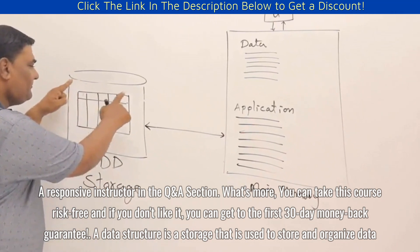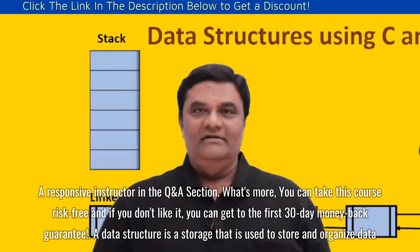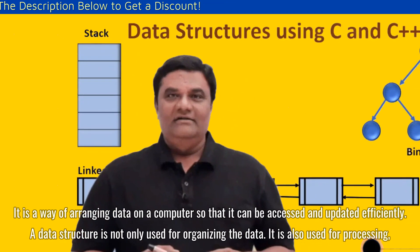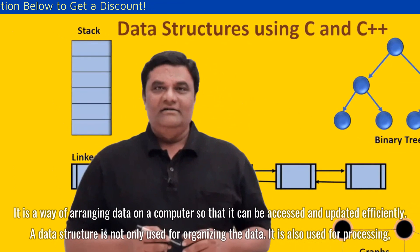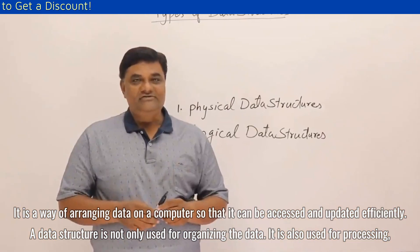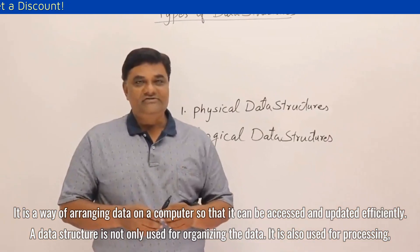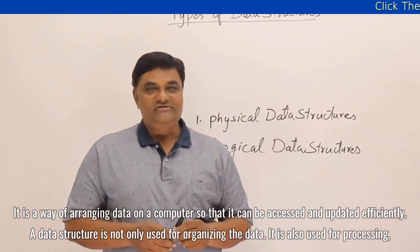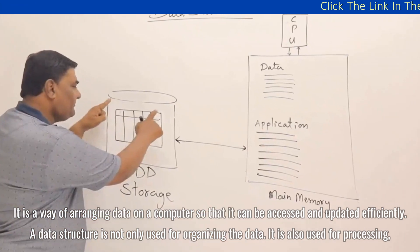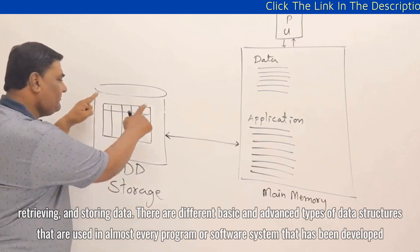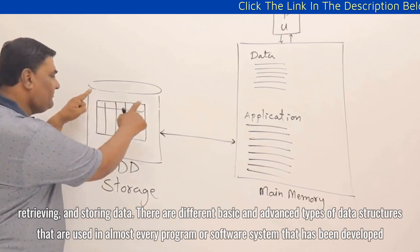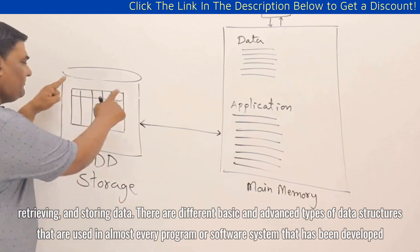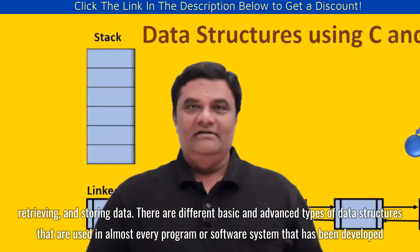A data structure is a storage that is used to store and organize data. It is a way of arranging data on a computer so that it can be accessed and updated efficiently. A data structure is not only used for organizing data — it is also used for processing, retrieving, and storing data. There are different basic and advanced types of data structures used in almost every program or software system that has been developed.